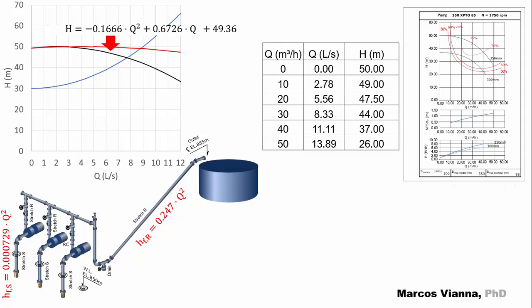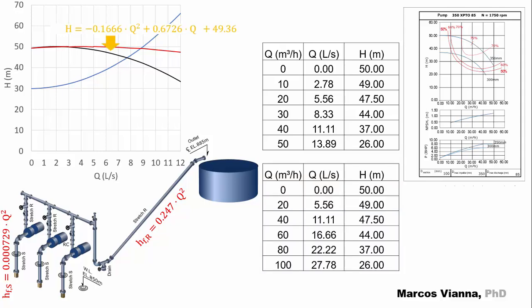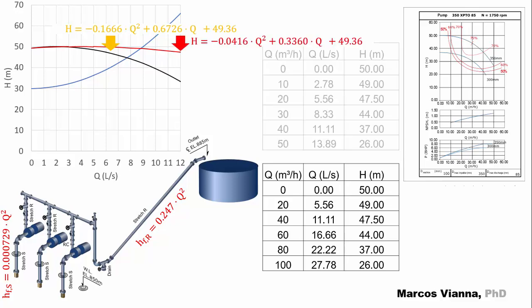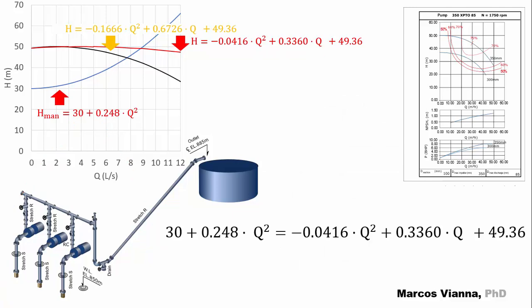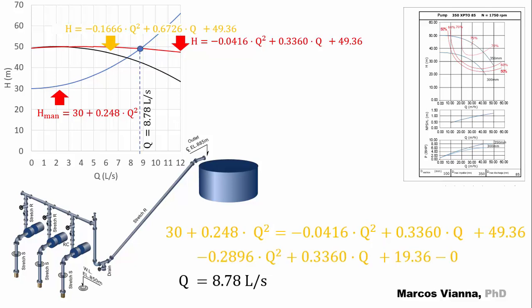In this table, you can see some pair of values for Q and H, extracted from the pump curve. So we can draw this new table, where the Q values are doubled. From these values, we can obtain this equation for H versus Q. As we know the characteristic curve of the system, which is the same, we put it together with the pump equation, obtain this equation, from which we can find the flow and the manometric head.